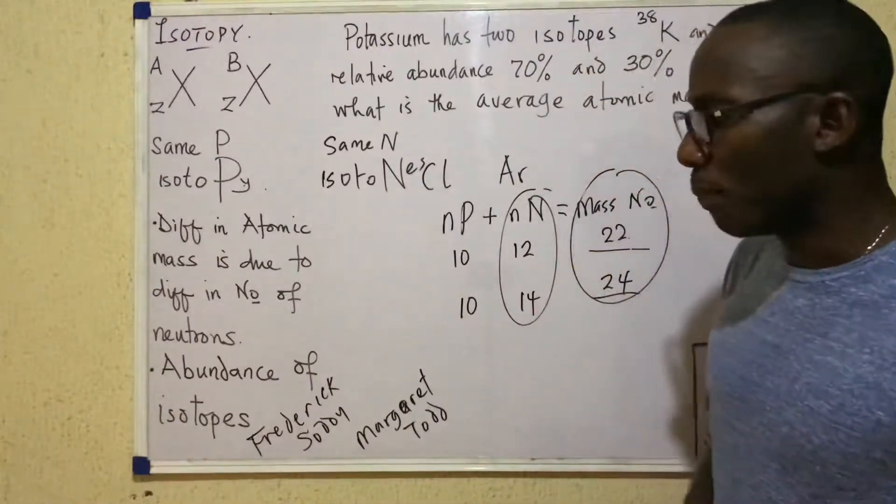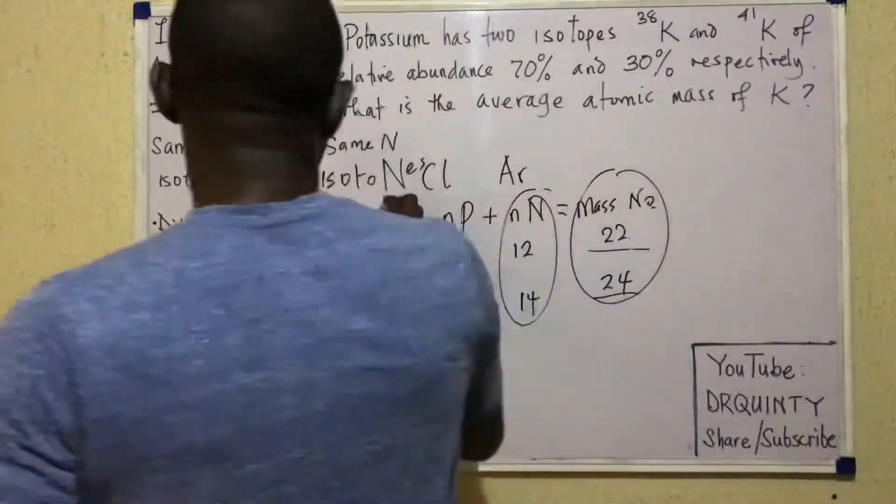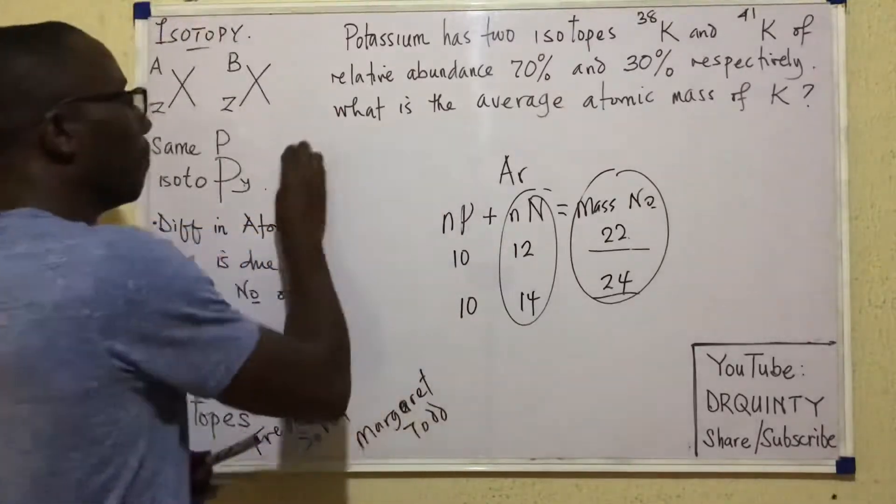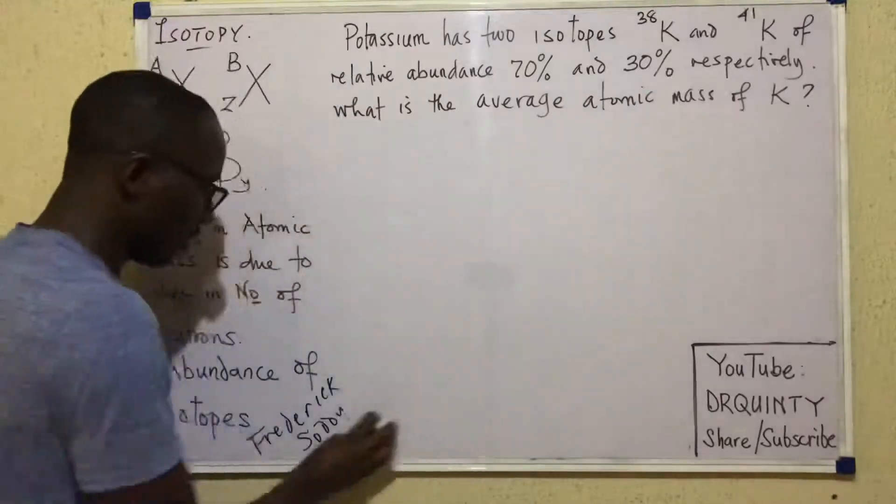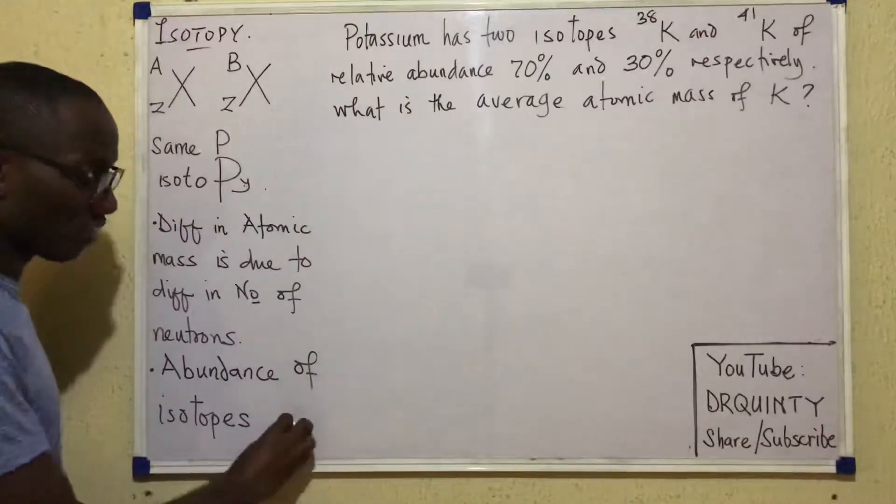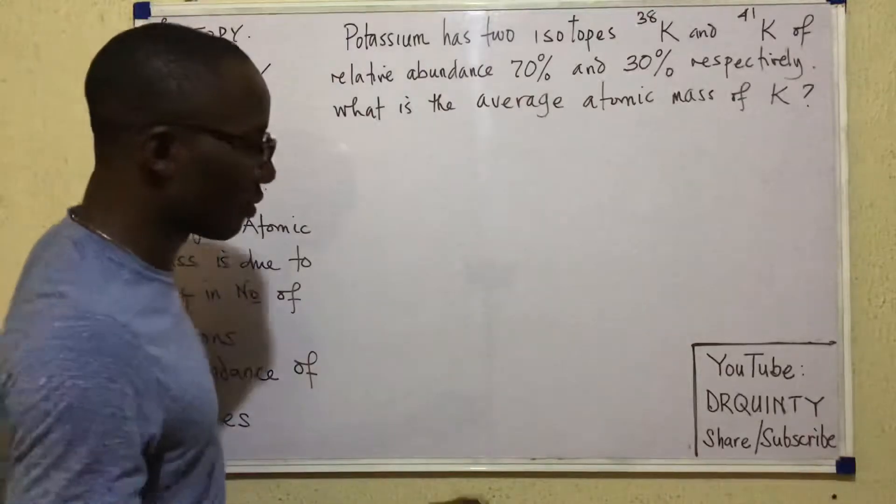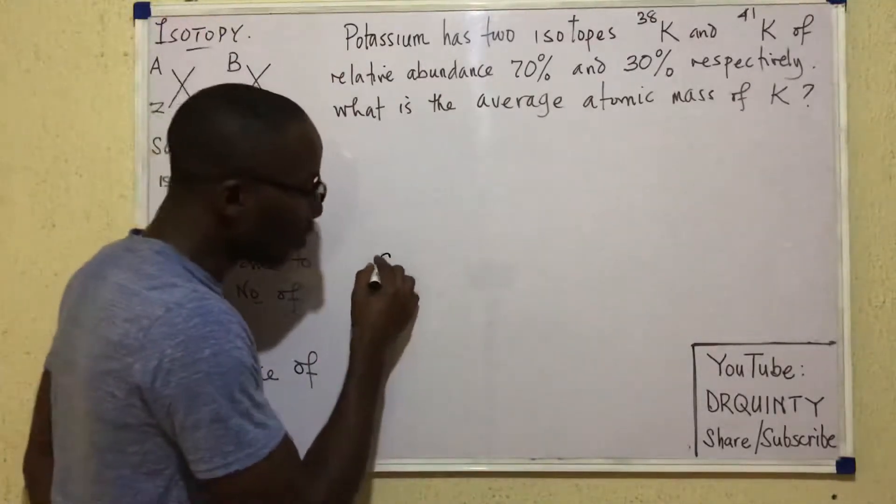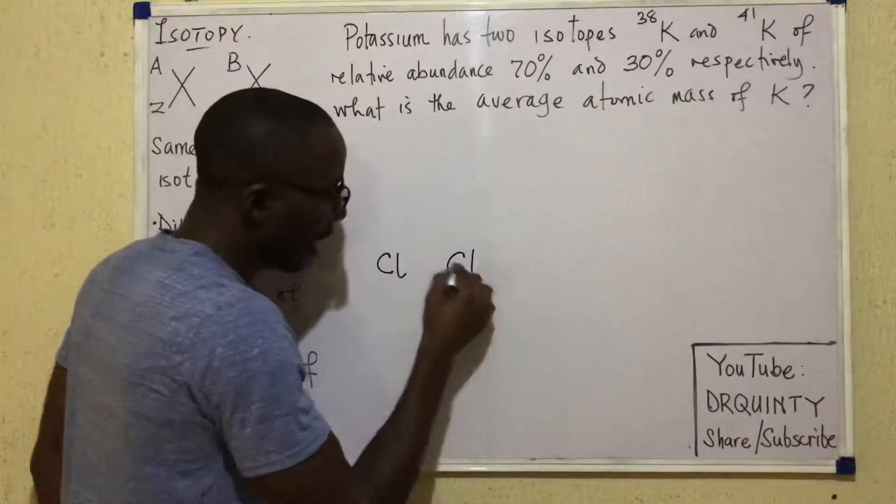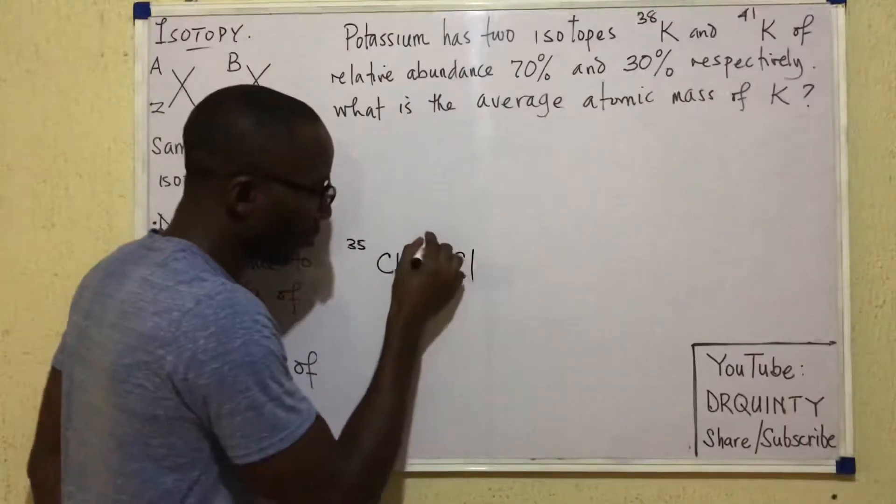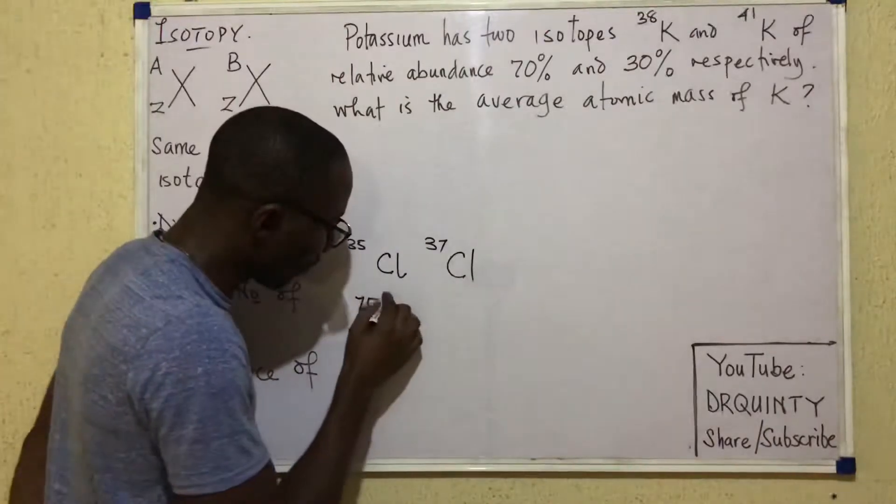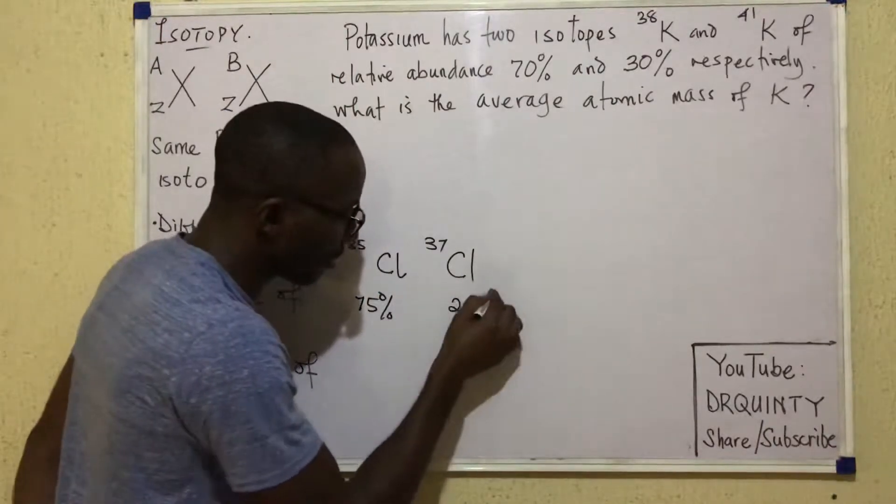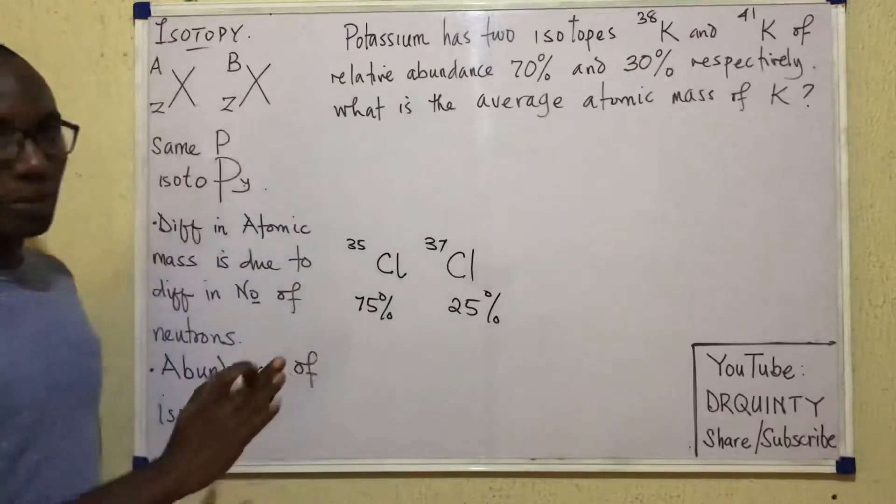Down here, it talks about abundance of isotopes. Now I need to tell you about what we call abundance or relative abundance of isotopes. Let me start by way of a simple statement. Look at this simple statement. It says, Chlorine has two isotopes and they are Chlorine 35 and Chlorine 37 and their relative abundances are 75% and 25%. This is a common question.